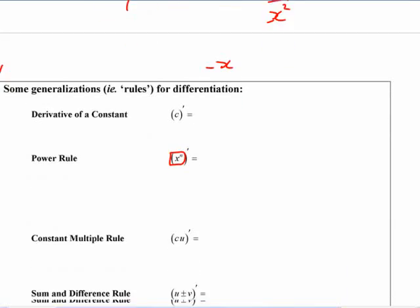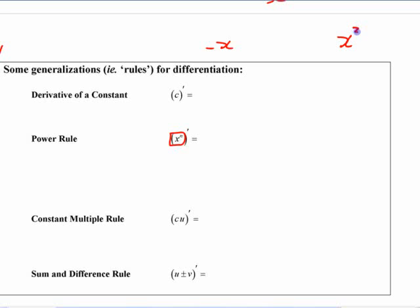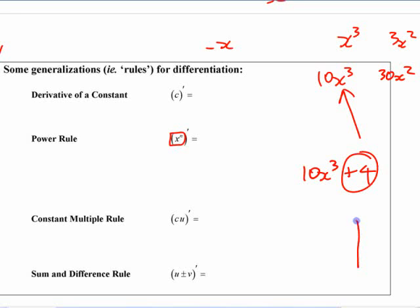Now, if you had a number in front, if you want the derivative of x to the third, it's 3x squared. If you want the derivative of 10x to the third, think about what this 10 does to this graph. What does this 10 do to the y values for this graph? It expands them. It's going to make the slope 10 times as big vertically, so then the derivative is going to be 10 times as big, right? What about 10x cubed plus 4? What does this do to the graph? It shifts it up 1. If I move a graph up 1, does that change the slope? No. So, this is not going to change the slope. That won't change it.